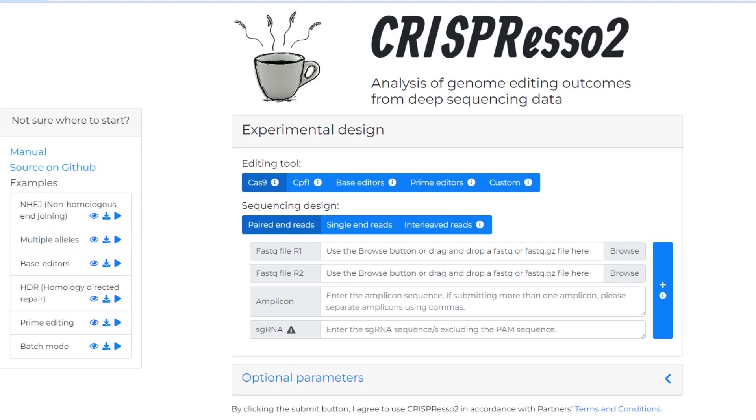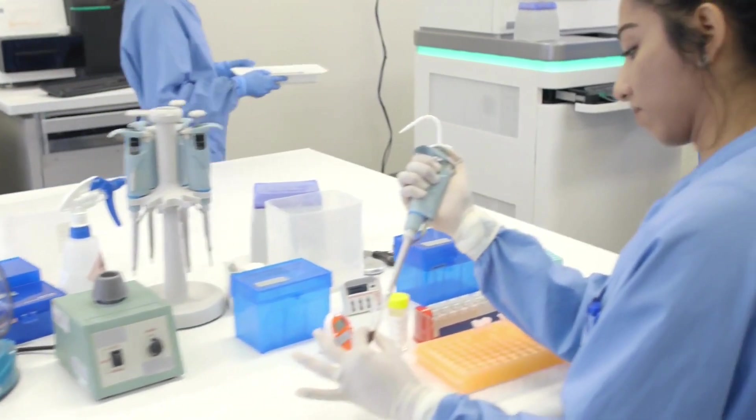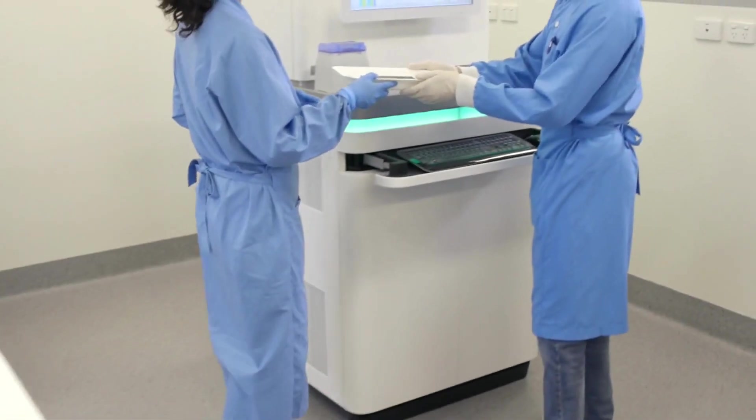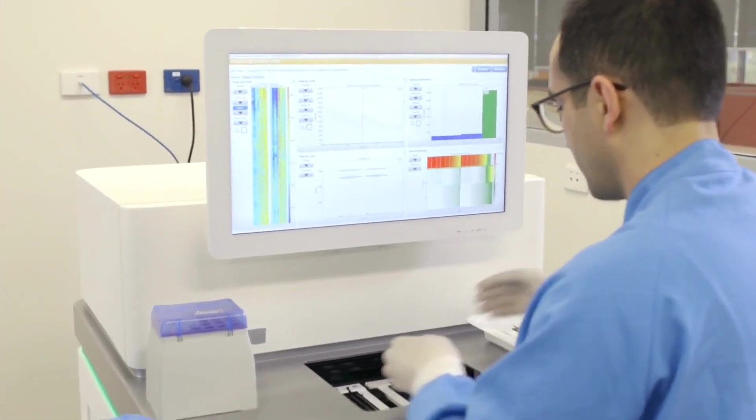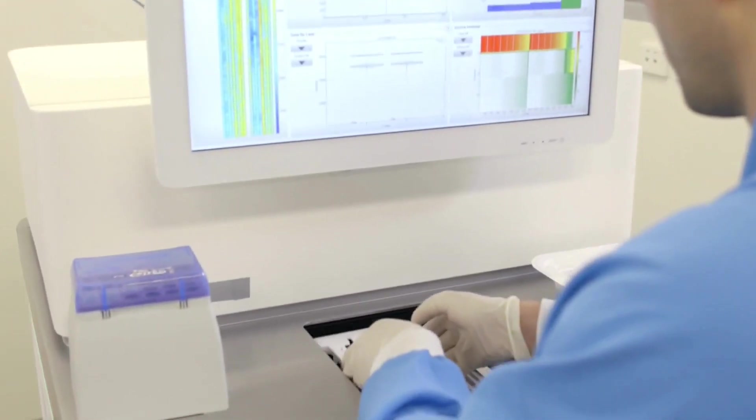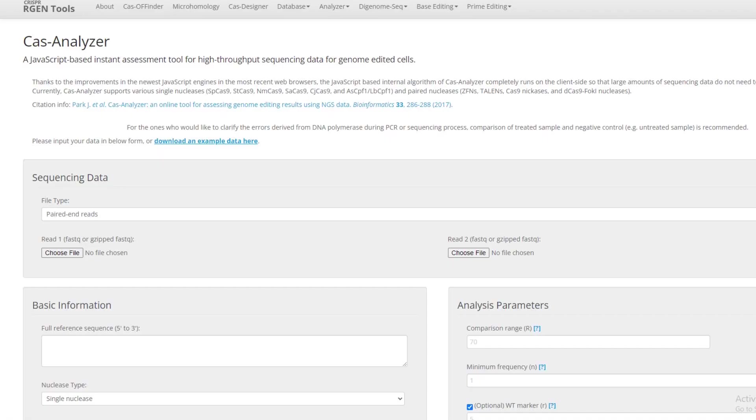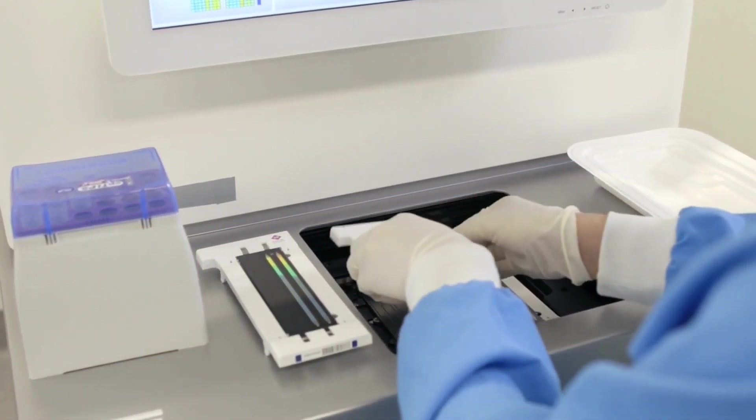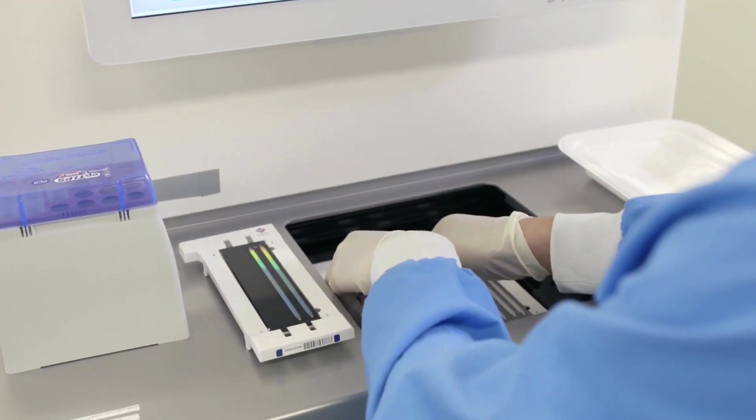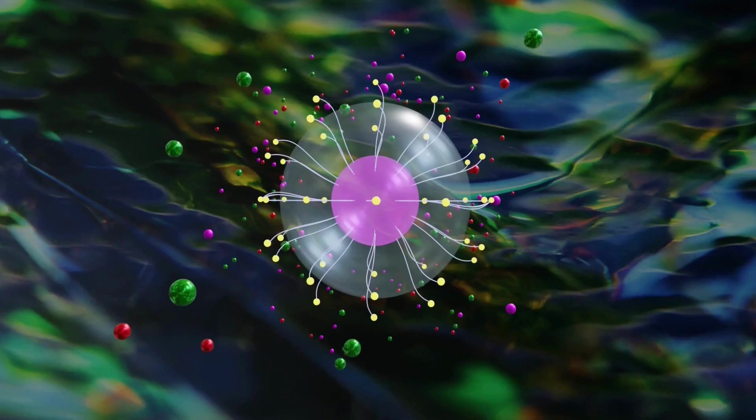Number 1: CRISPResso 2. This software is a popular tool for analyzing CRISPR-Cas9 gene editing experiments. It provides detailed information about the efficiency of gene editing and the types of mutations that occur. Number 2: GAS Analyzer. This is another software that is widely used for analyzing CRISPR-Cas9 experiments. It is a user-friendly tool that provides information about target sites, mutations, and off-target effects.